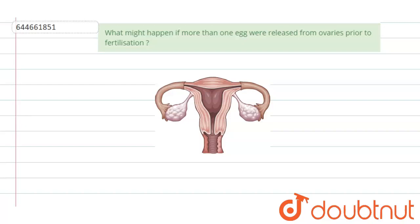You can see here this is the uterus, and you can see the fallopian tubes — the tubular structures — and you can also see the ovaries. This is the ovary from where the eggs will arise. Eggs move from the ovaries onto the fallopian tubes and from the fallopian tubes to the uterus.